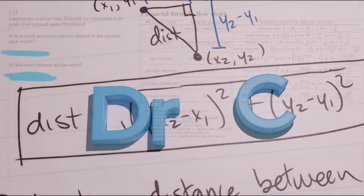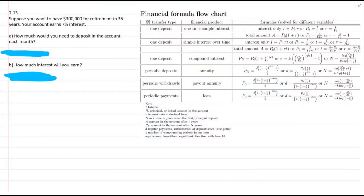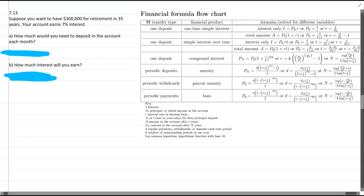This question: we want to have $300,000 for retirement in 35 years. Your account earns 7% interest. How much do you need to deposit each month? So we're making a monthly deposit, so right away, that's periodic deposits. We're going to use one of these three right here, so you could ignore the rest.